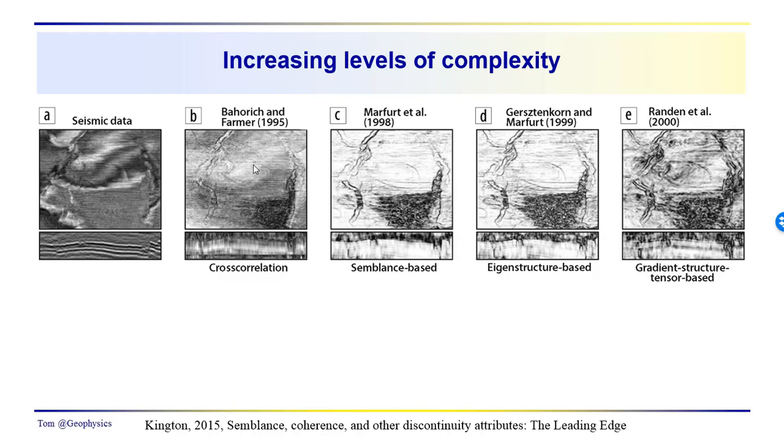So the volume that was compiled by Bohorich and Farmer, the cross-correlation. This is just a plot of the cross-correlations as defined previously. You can see a lot going on there. We've got some obvious channeling. We can see some channels coming out of the top on both sides. We can see some tributaries branching off. This looks like a distributary channel complex. And then we've got a channel here, a channel here, a channel there.